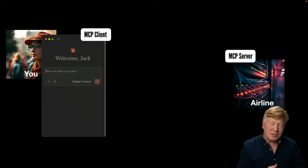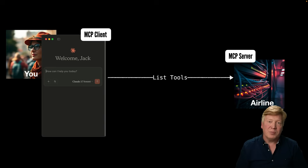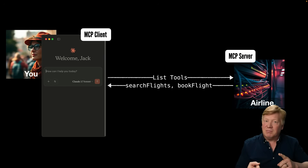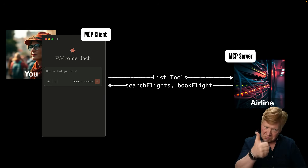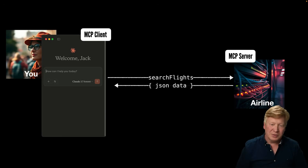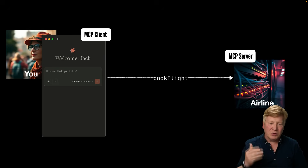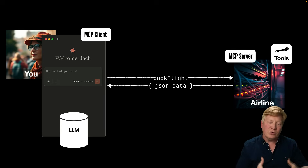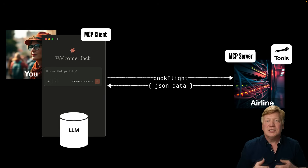Let's say you want to book a flight. Claude Desktop is an MCP client. It can connect to an MCP server from the airline and say, list your tools — what do you have available? The airline sends back tools to search flights and book flights. The MCP client says, search for a flight from Portland to Honolulu. It sends back JSON data. Claude selects the flight and invokes the book flight tool, which returns a confirmed booking. Claude is interacting with an LLM and invoking tools within that MCP server.